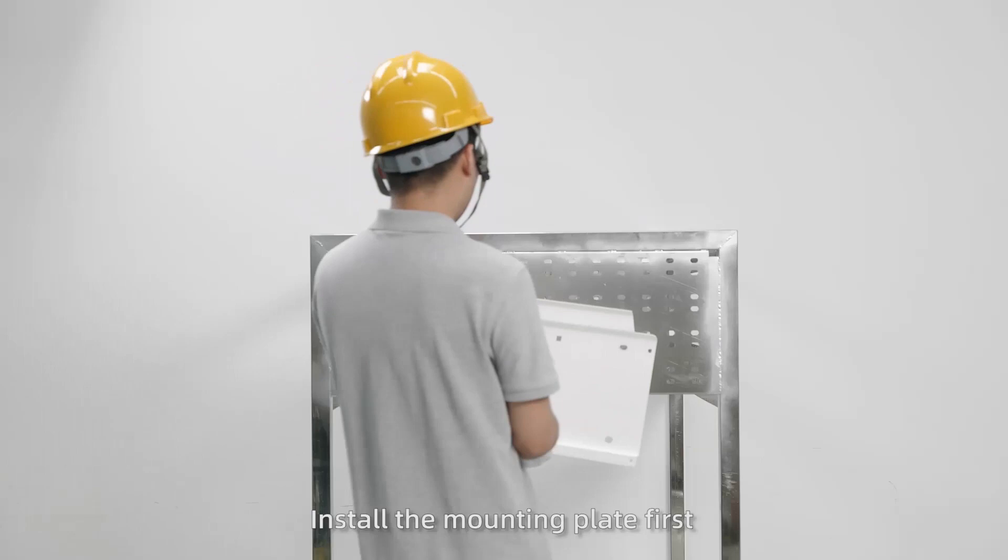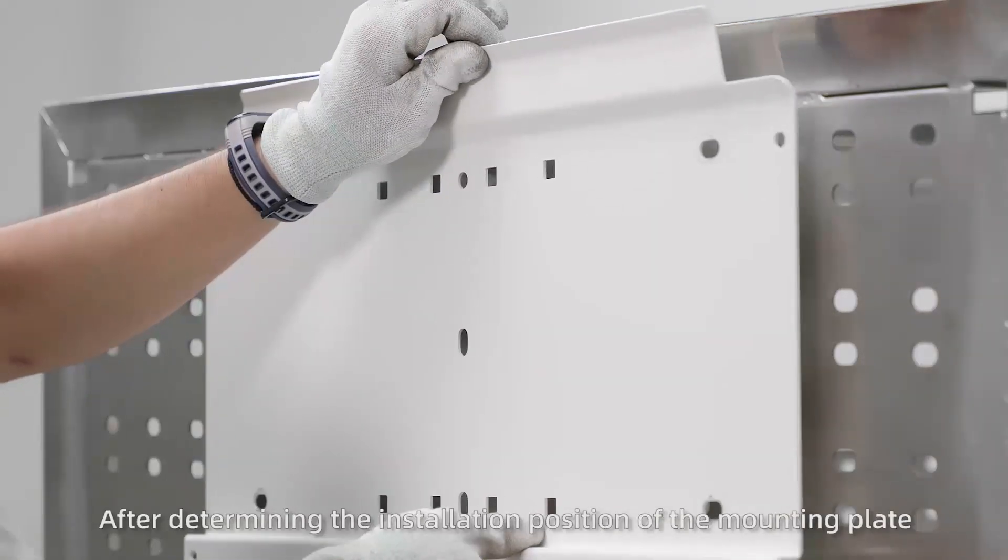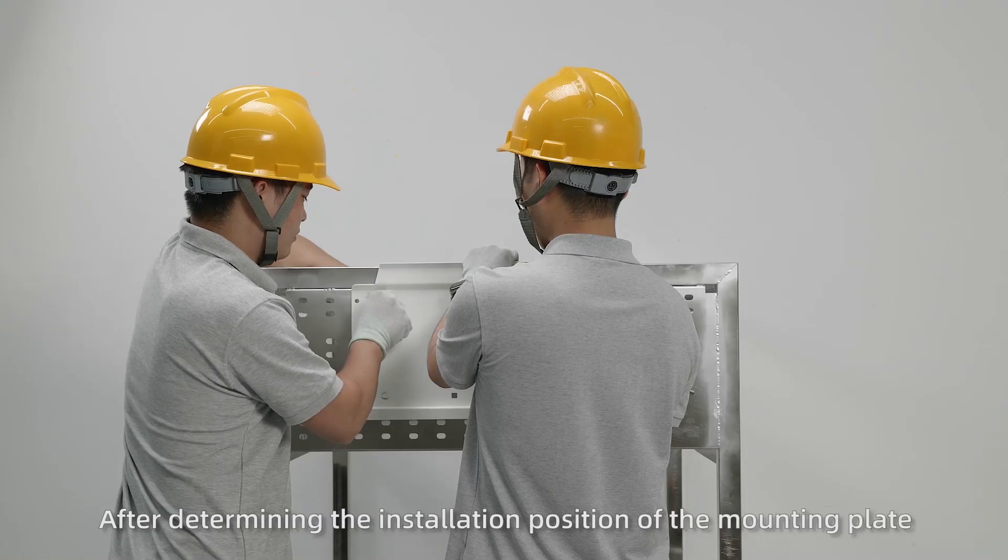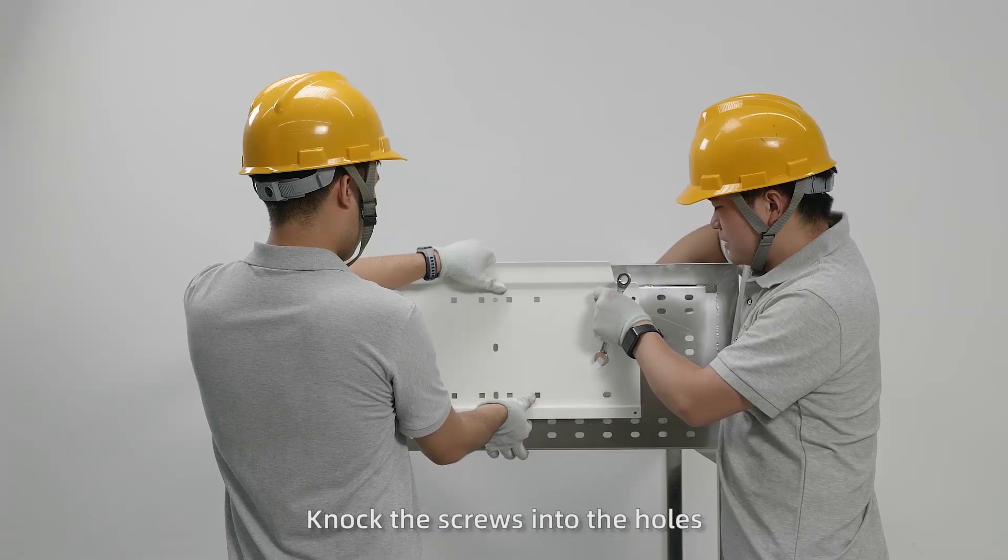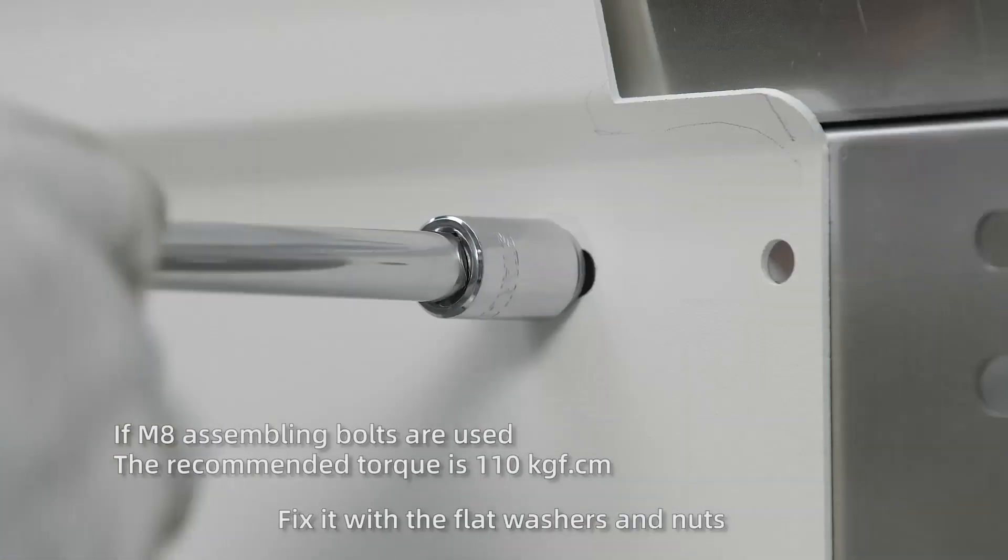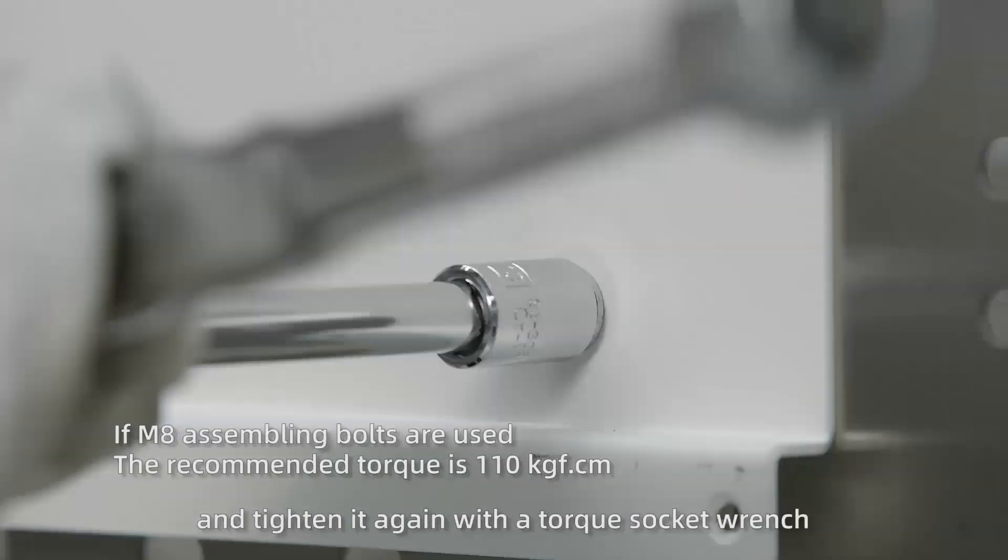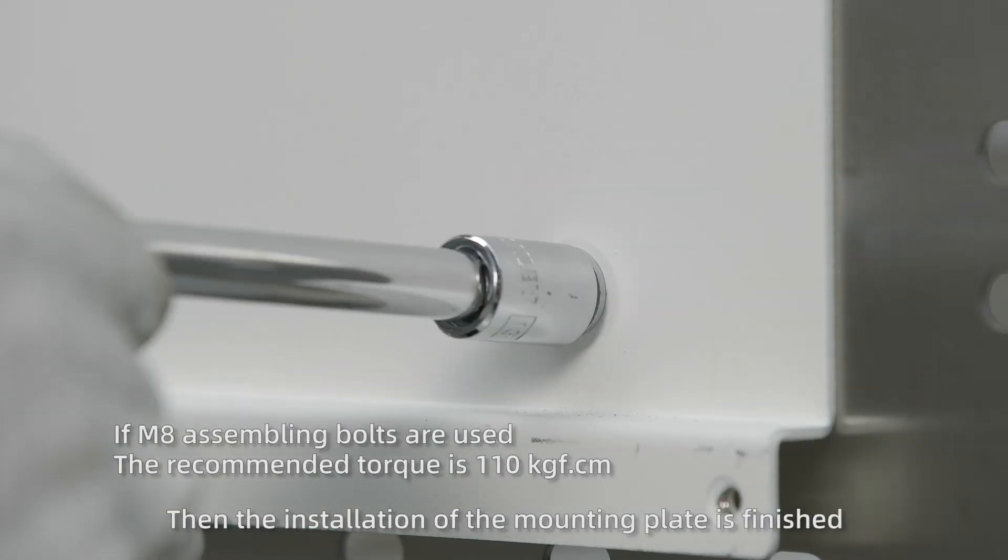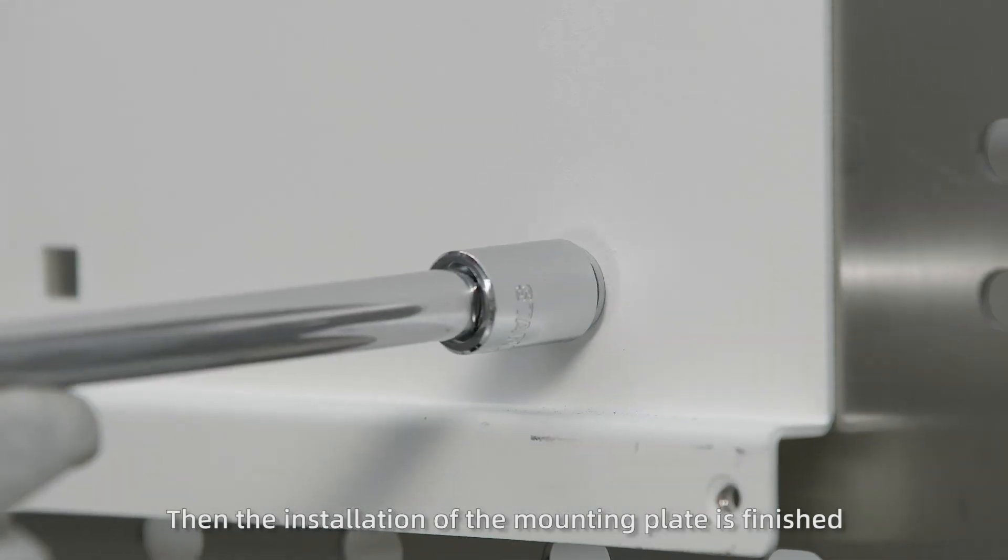Install the mounting plate first. After determining the installation position of the mounting plate, knock the screws into the holes. Hang the mounting plate on the screws, fix it with the flat washers and nuts, and tighten it again with a torque socket wrench. Then the installation of the mounting plate is finished.